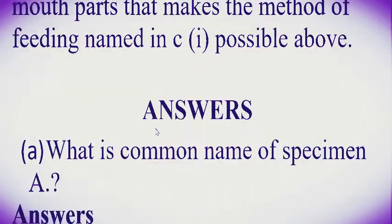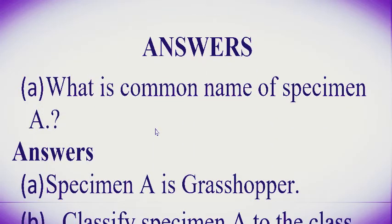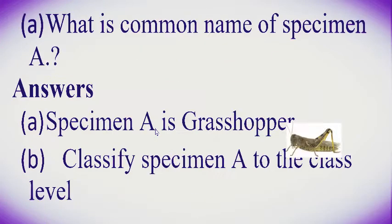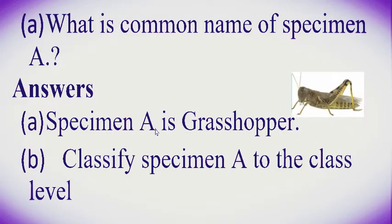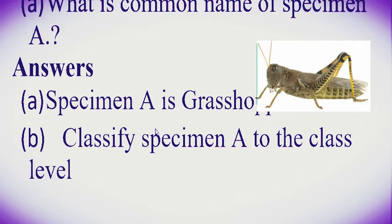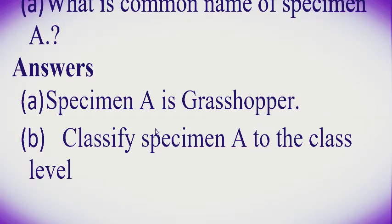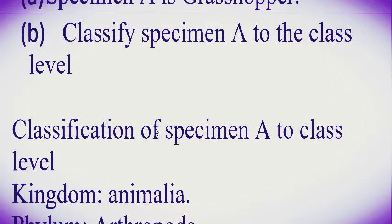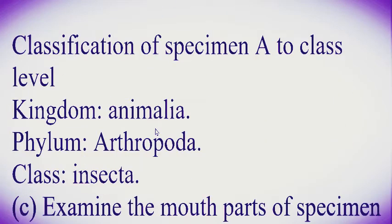We proceed with the answers. Question number one: what is the common name of Specimen A? The answer for question number one — Specimen A is a grasshopper, as you can see in the diagram.